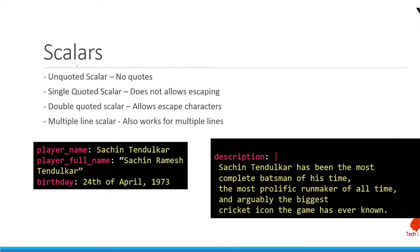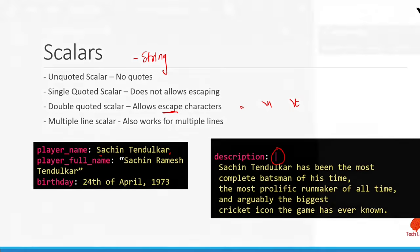Now let's understand scalars. Scalars can be of multiple types. You can have an unquoted scalar — scalar is similar to a string. Then you have single-quoted scalar where you use single quotes, and double-quoted scalar which also allows escape characters such as \n and \t. You can also have a multiple-line scalar, which works for multiple lines using a pipe operator.